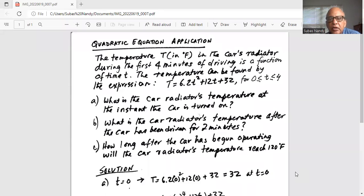The temperature T (capital T) in degrees Fahrenheit in the car's radiator during the first four minutes of driving is a function of time t. The temperature can be found by the expression T = 6.2t² + 12t + 32, for t between 0 and 4.